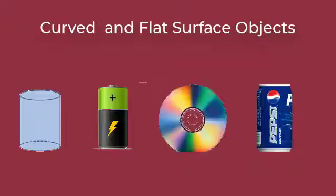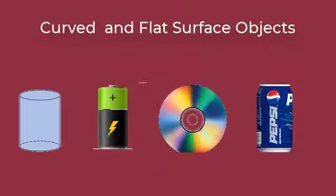But children, some objects have curved surface and flat surface. So they can both slide and roll. We have some examples here. Look at these. They can both roll and slide.